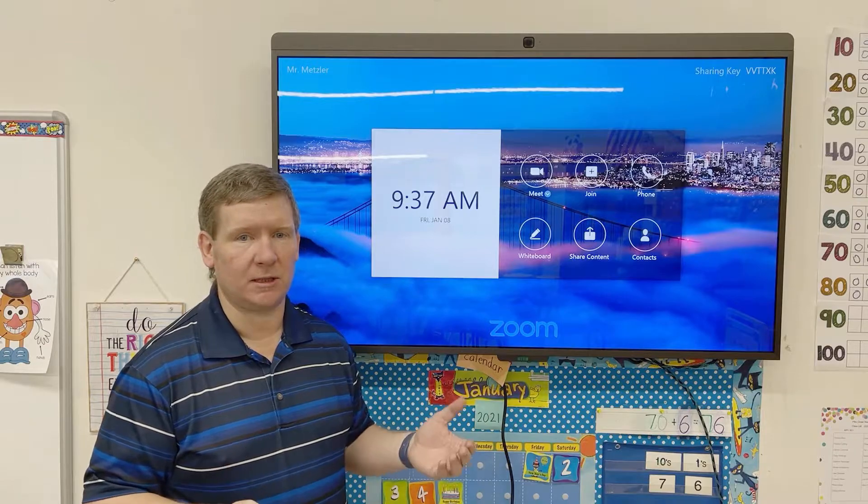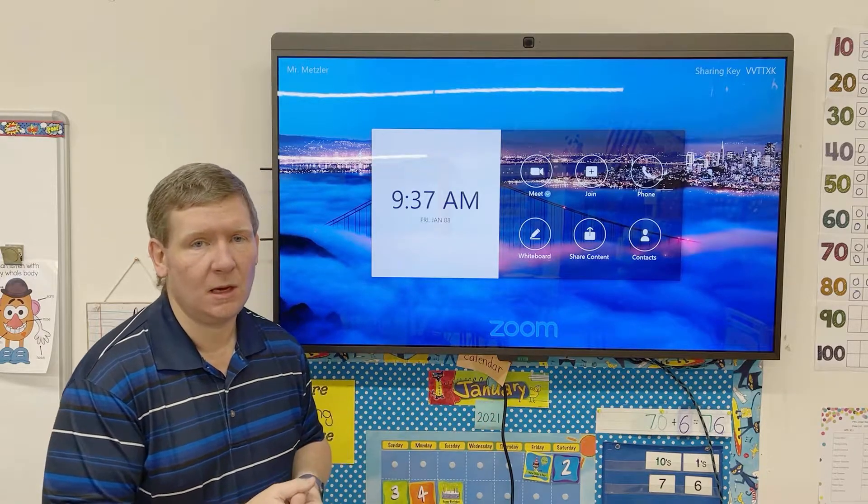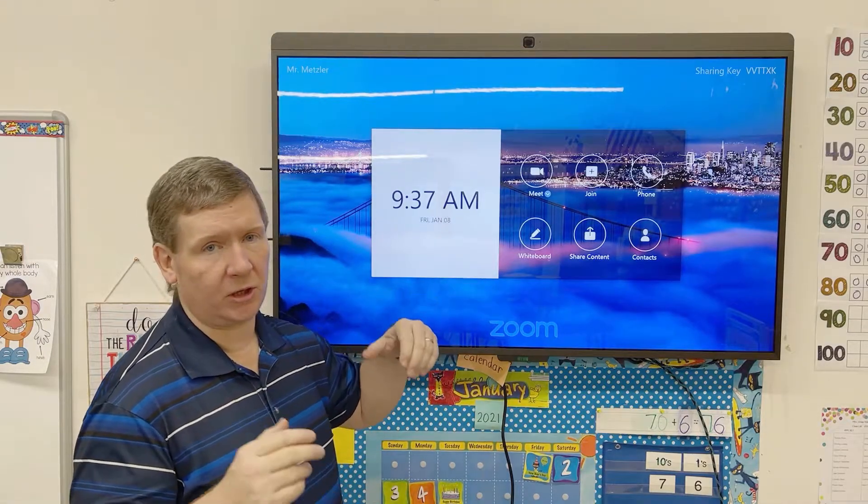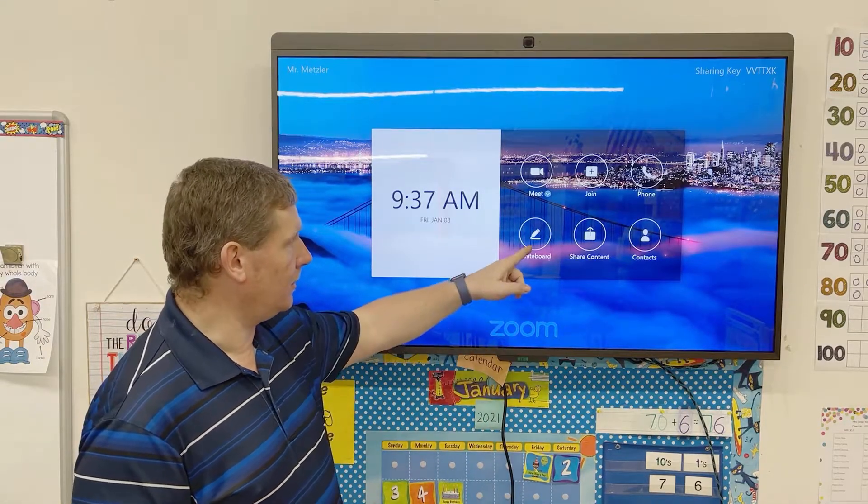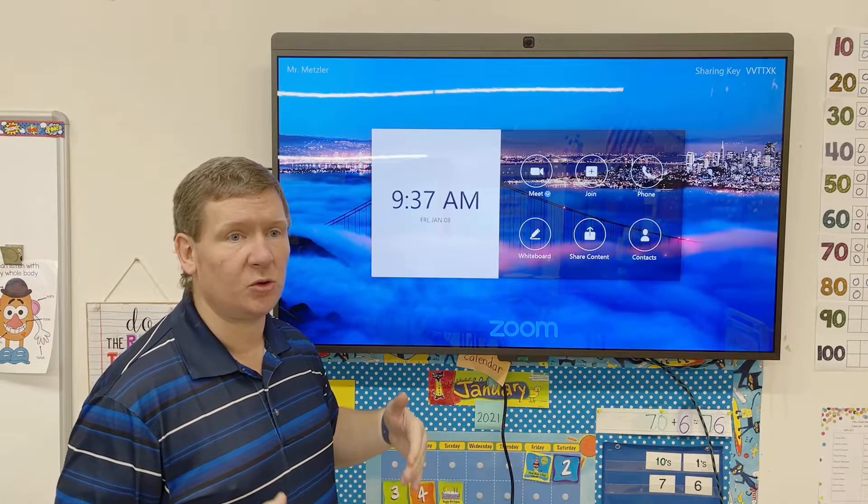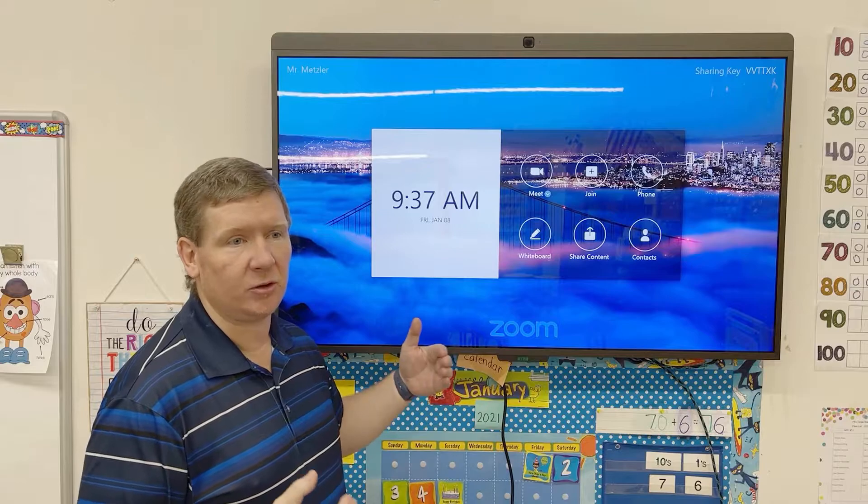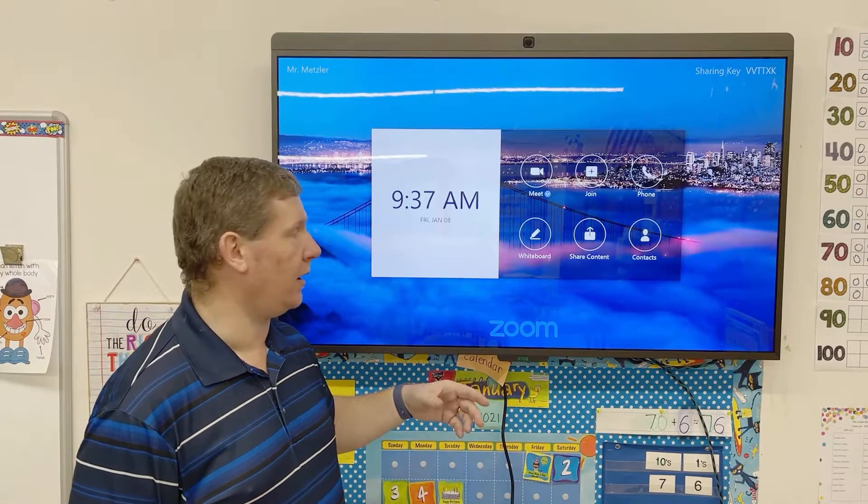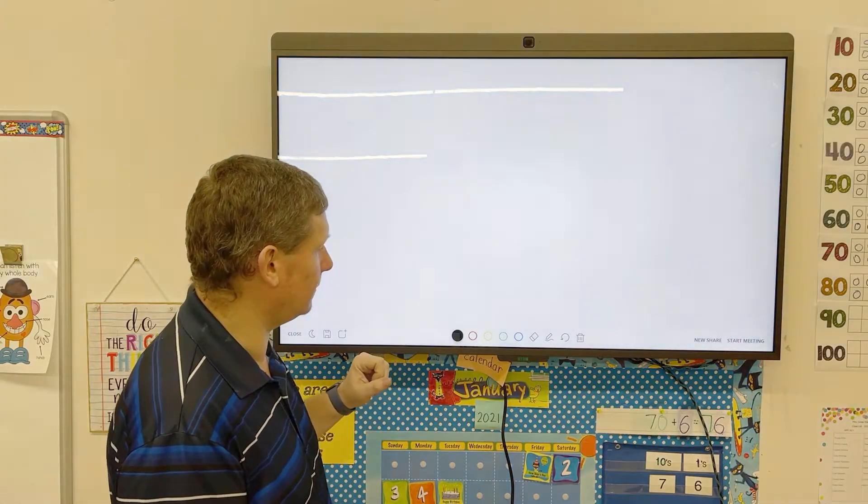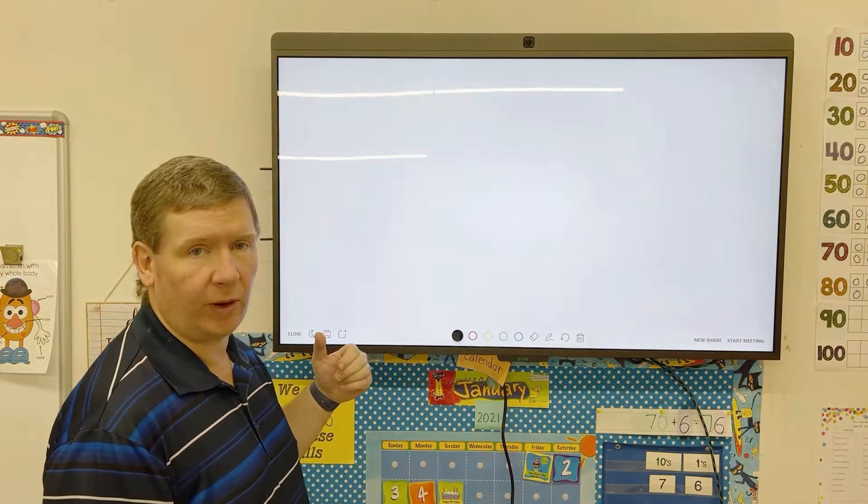So today I'm going to take a few minutes to show you the whiteboard feature. When you're on your screen, there's two ways to use your whiteboard. You can use it as a straight whiteboard, meaning you're not going to be in a Zoom with a classroom sitting in the room. On your D10, you can just tap the whiteboard icon and now you're in your whiteboard. You've got a bunch of features across the bottom here.